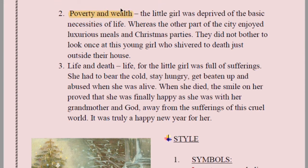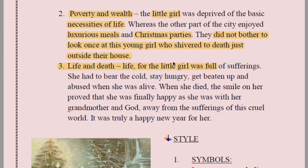Her father is indifference; her grandmother is love. The tenderness and love she used to receive from her grandmother was the only love she ever had. The third contrasting image: poverty and wealth. Some people are extremely wealthy, enjoying Christmas parties and luxurious meals, while others like this girl are deprived of basic necessities. The rich did not bother to look once at the young girl who shivered to death just outside their house.